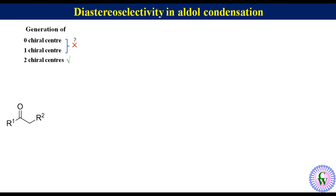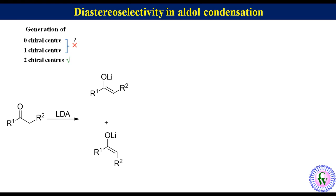Let's have a ketone with alpha hydrogen. When it is treated with a base like LDA, it produces two enolates in unequal proportion depending upon the nature of R1 and R2. The enolate in which R2 is cis to the oxide ion is called the cis enolate, and the other having R2 trans to the oxide ion is called the trans enolate.